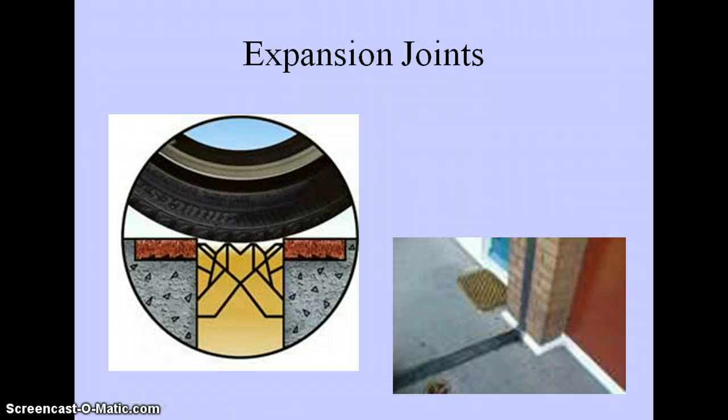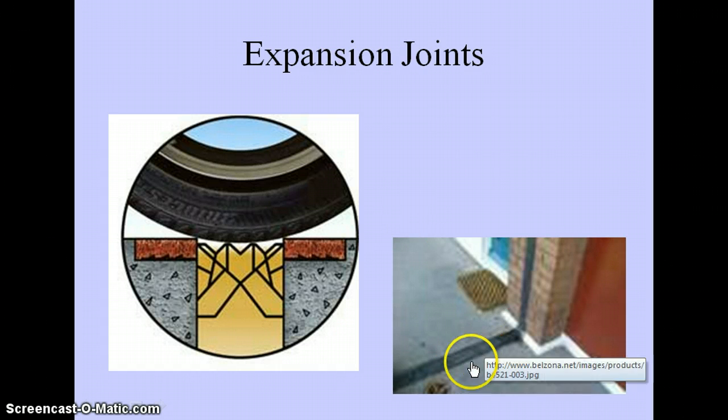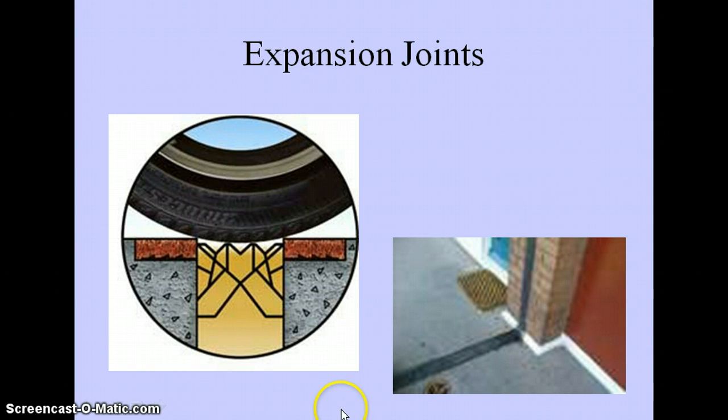You may notice sometimes that we have expansion joints on roads or in buildings. We actually have one in the new section of the high school. So if you were to walk down to the new section of the high school, you'll see these metal plates like this that run along the floor and the wall. And those are expansion joints. Those are put in so that the building and those particles can expand and contract based on the temperature outside.